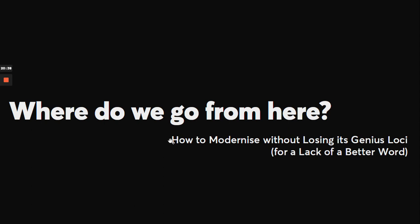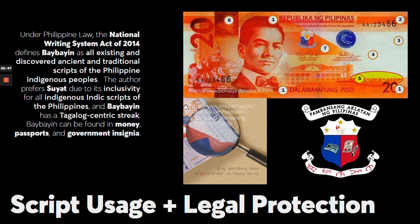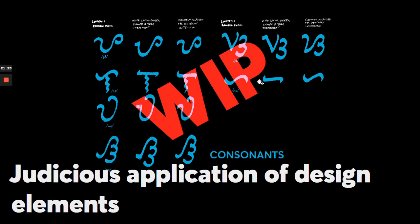So where do we go from here, and how do we modernize without losing its genius loci? Under Philippine law, the National Writing System Act of 2014 defines Baybayin as all existing and discovered ancient and traditional scripts of the Philippine indigenous people. However, I usually prefer the term Suyat due to its inclusivity. Currently, Baybayin is used on paper bills, passports, and some government insignia. Given all of these details, it's still a work in progress, and given some rules and exceptions, apply your design elements judiciously. You can actually try Latin, Greek, Khmer, and Thai elements, as long as you know how to harmonize them — which is quite a tough job.